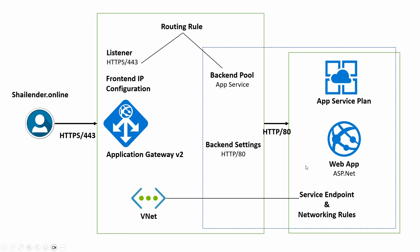Once the web application is hosted on App Service, I'll create Azure Application Gateway version 2 where the front-end IP configuration, listener, backend pool, backend setting, and routing rule will be created. The backend pool will have the App Service for ASP.NET, and in the backend settings I'll use the protocol HTTP. That means the traffic from the application gateway to App Service will be unencrypted. However, during the creation of the listener I'll upload a certificate for the custom domain shalander.online and use HTTPS, so traffic from the user to the application gateway will be encrypted and will use port 443.